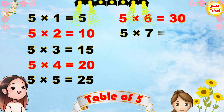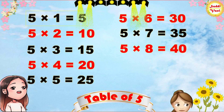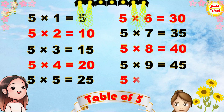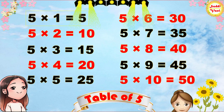5 7s are 35, 5 8s are 40, 5 9s are 45, 5 10s are 50.